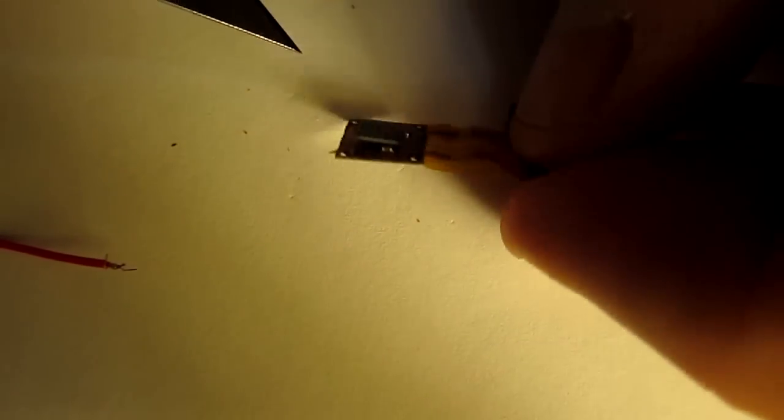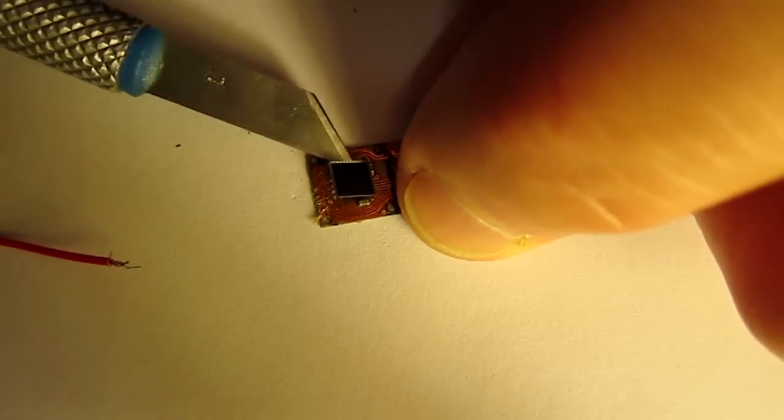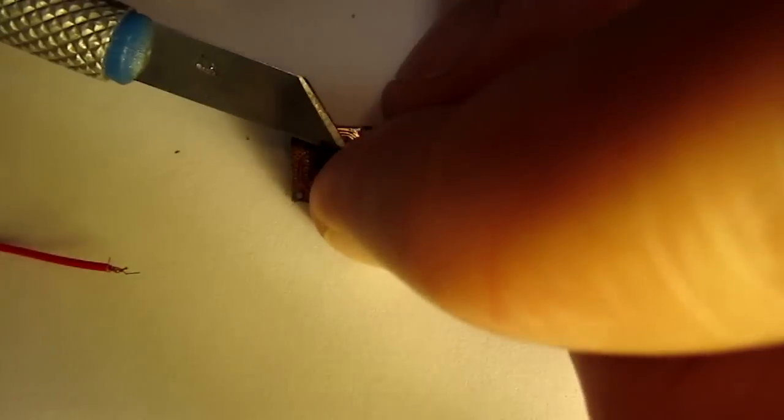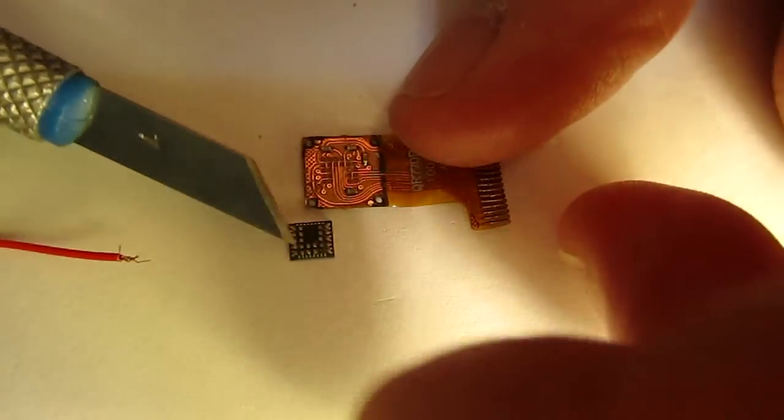So here you have the CMOS image sensor, which is a ball grid array, and that gets fused onto the flat cable at 473 degrees Fahrenheit.